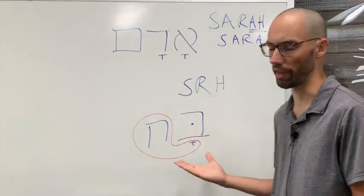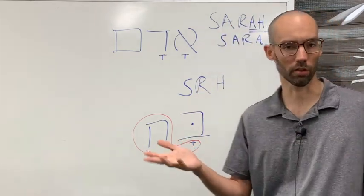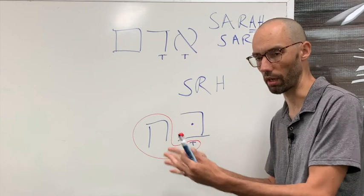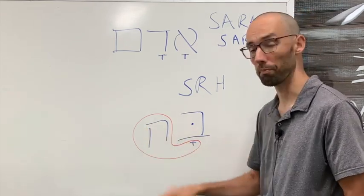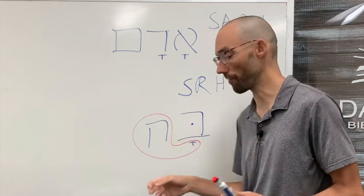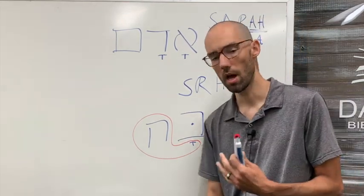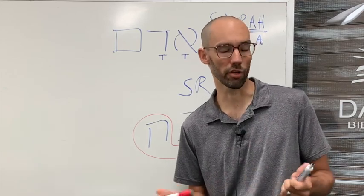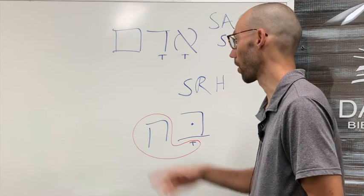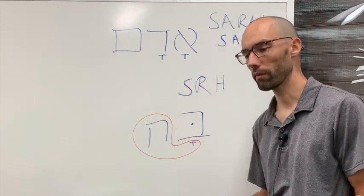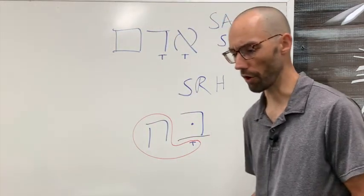The word that they gave for these is mater lectionis, so mothers of reading. They added these letters to help people read before they had a vowel system. We've learned two vowels so far, the Kamatz and the Kamatz Hey. Those are the first two on your list on page 11 in your notes.